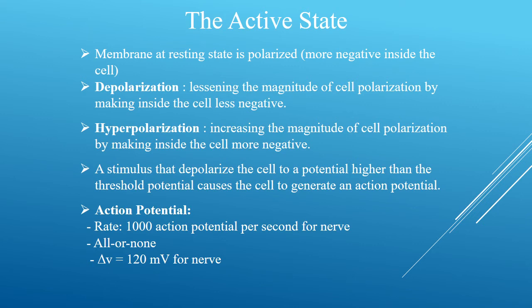At the same time, the potassium ions present inside the cell try to leave the cell, but they are unable to move as rapidly as sodium ions. As a result, the cell has a slightly positive potential, and this potential is called the action potential. The action potential is nearly 20 millivolts. The process of changing from the resting state to the action potential state is called depolarization.